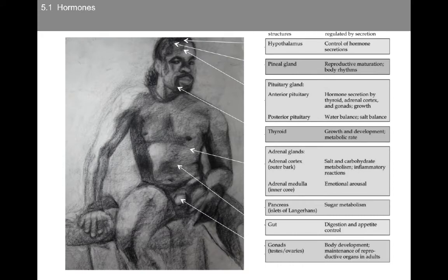When we talk about the endocrine system, we're going to talk about different glands. We'll talk about the hypothalamus, which plays an important role in the control of hormone secretions, as well as the pineal gland, which exerts its effect in reproductive maturation and body rhythms. We're going to really focus a lot on the anterior and posterior pituitary. The anterior pituitary controls hormone secretions by the thyroid, the adrenal cortex, and the gonads. The posterior pituitary is important for water balance, salt balance, and the release of certain hormones important for bonding and childbearing.